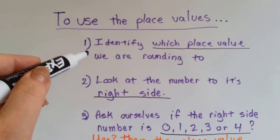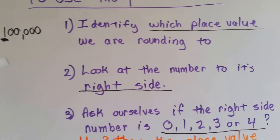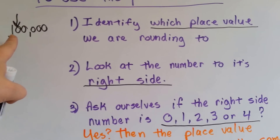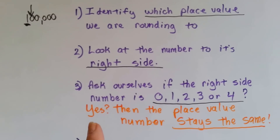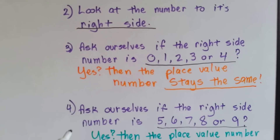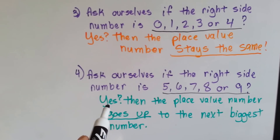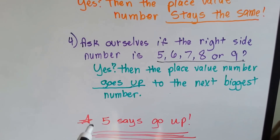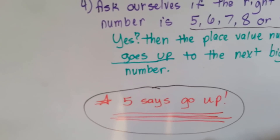You need to identify which place value you're rounding to — we know that's 100,000, that place right there. You look at the number just to the right of it. We ask ourselves: if the right-side number is a 0, 1, 2, 3, or 4, then the number in that place value stays the same. If the answer is no — if the number is a 5, 6, 7, 8, or 9 — then that number in the place value goes up to the next biggest number. 5 says go up. Remember this: 5 says go up. If you can remember '5 says go up,' you will never have a problem rounding.